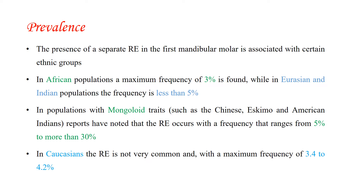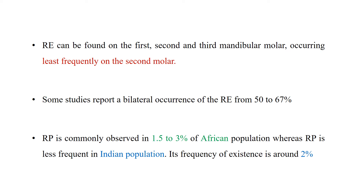Regarding prevalence: radix entomolaris is seen as a separate root in the first mandibular molar and is associated with certain ethnic groups. In African populations, the frequency is around 3%; in Eurasian and Indian populations, less than 5%. In Mongoloid populations such as Chinese, Eskimo, and American Indians, it occurs in the range of 5% to more than 30%. In Caucasians, it is uncommon with a frequency of 3.4% to 4.2%. It is most commonly found in the first mandibular molar, least frequently in the second molar, and bilateral occurrence ranges from 50% to 67%.